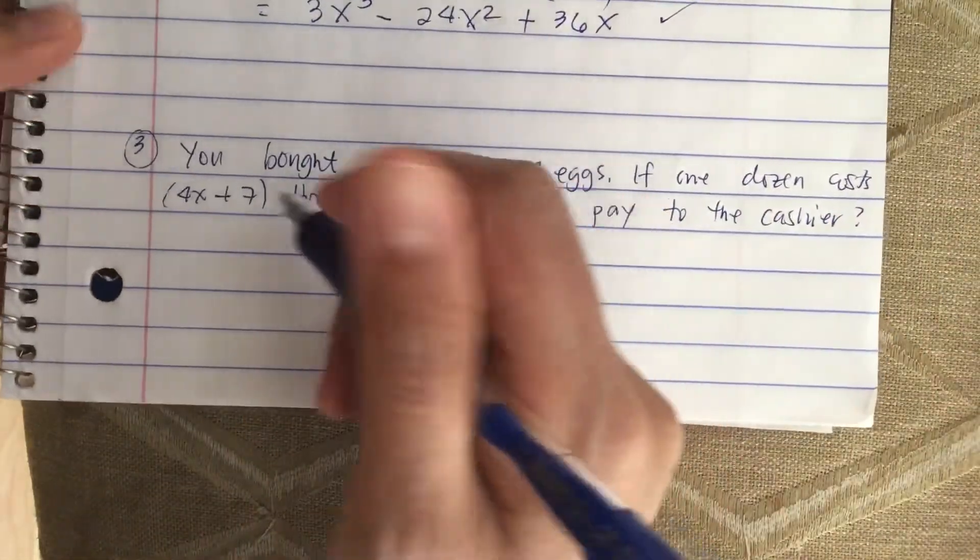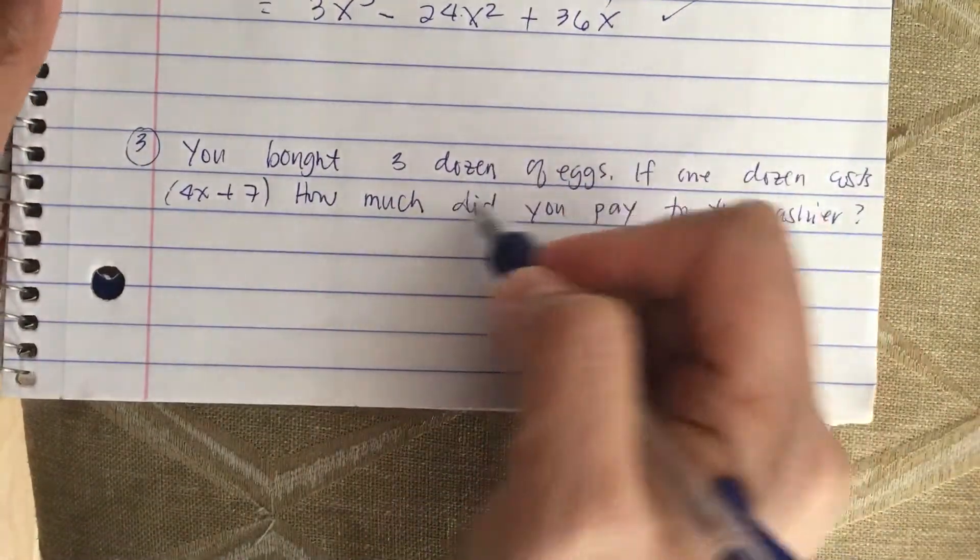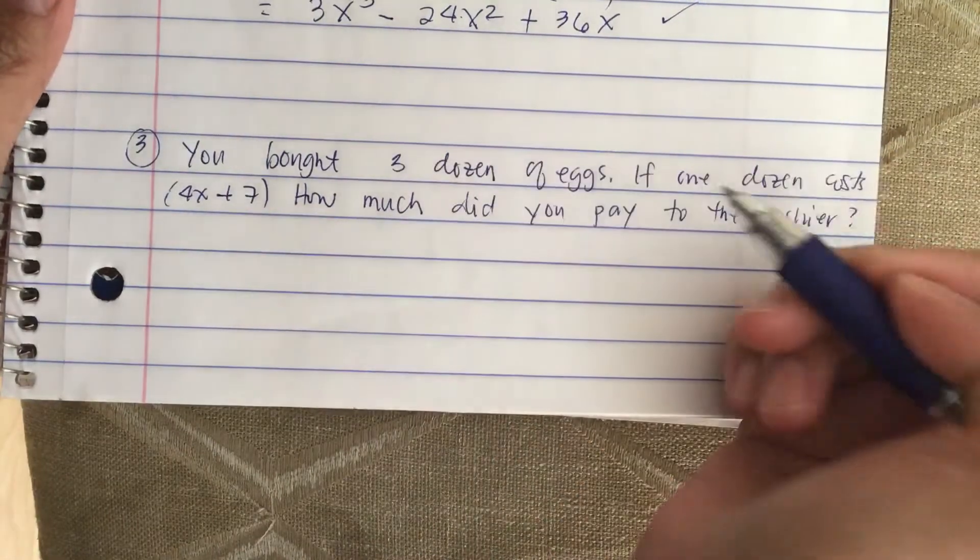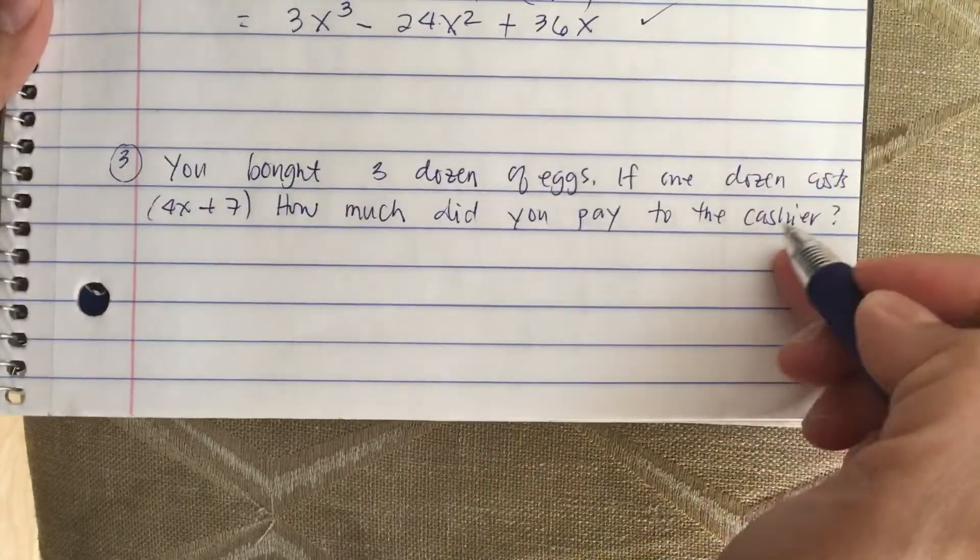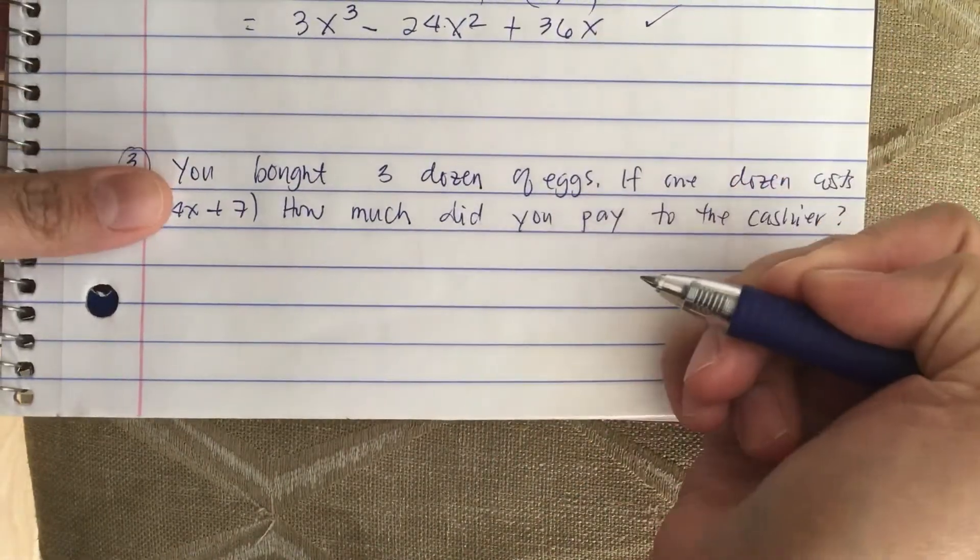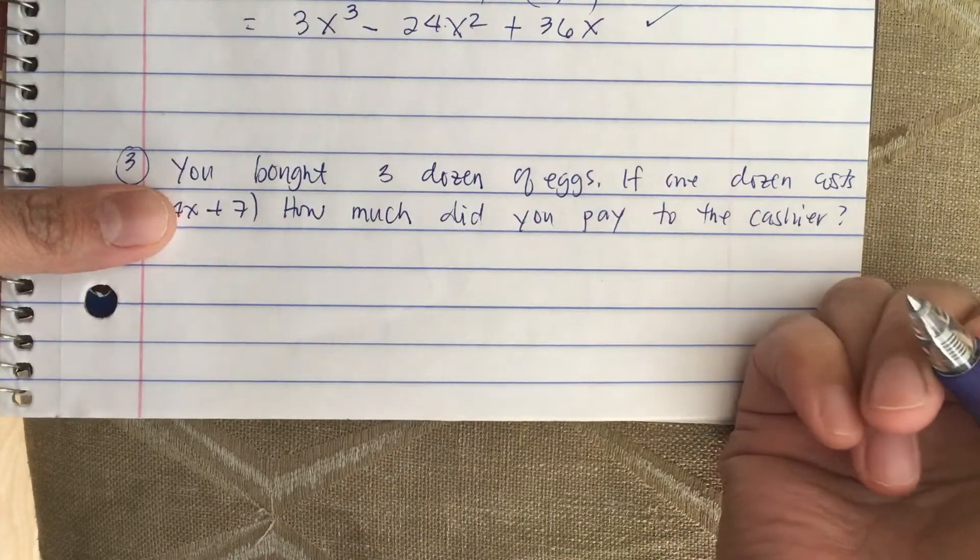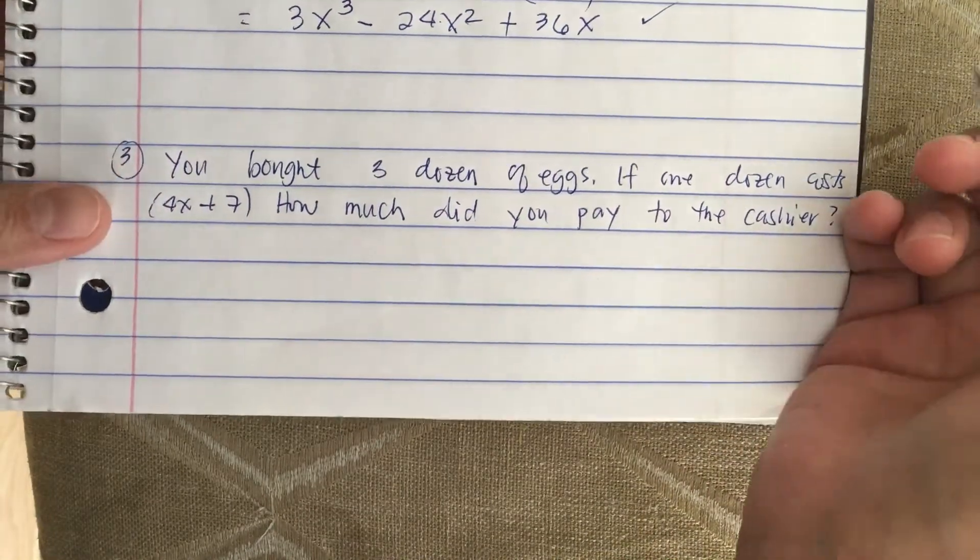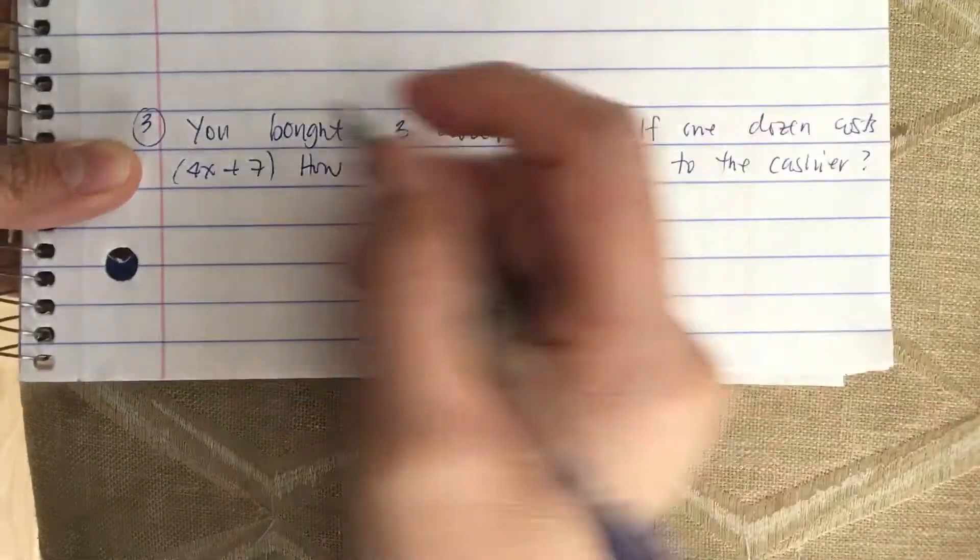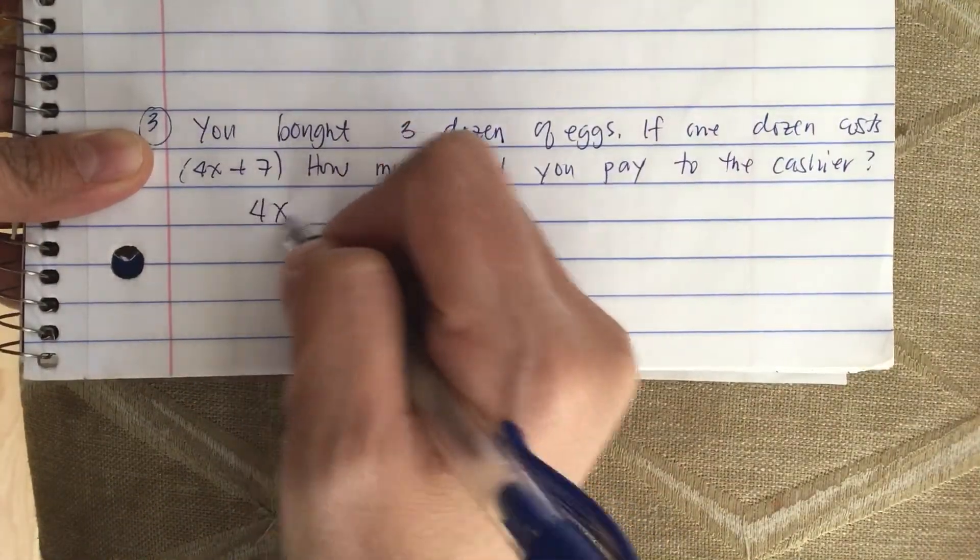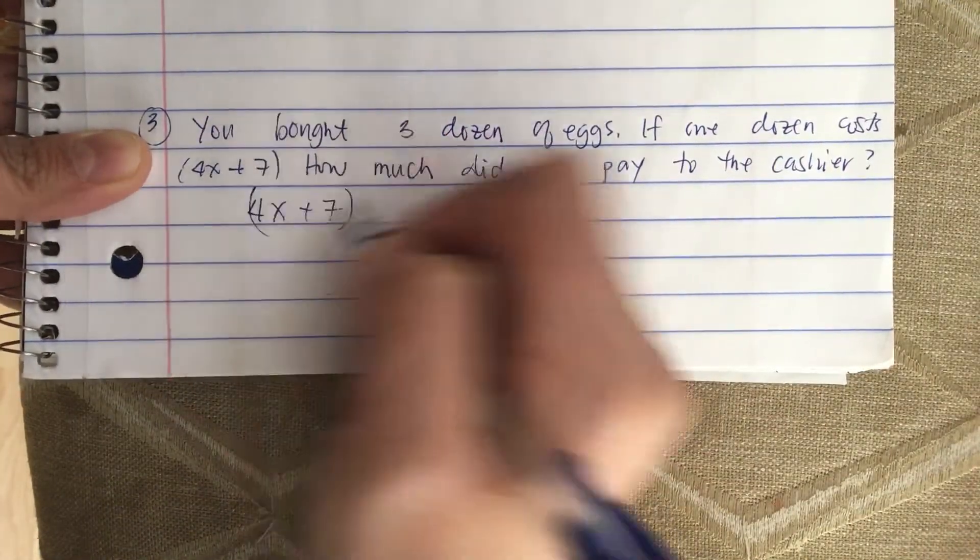Next problem: you bought three dozen eggs. If one dozen costs 4x plus 7, how much did you pay to the cashier? So one dozen costs 4x plus 7.